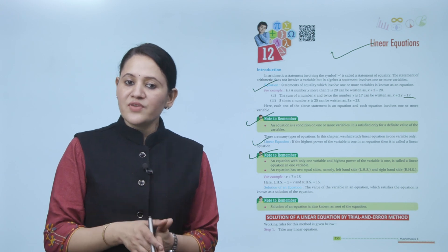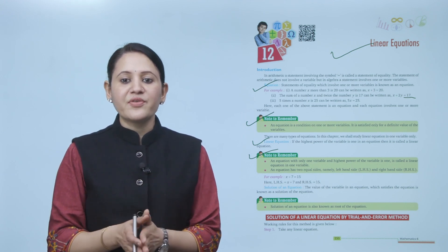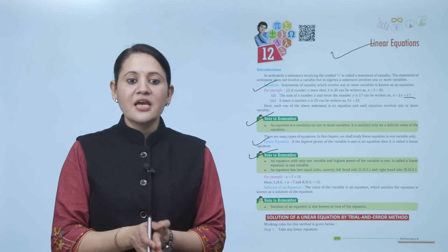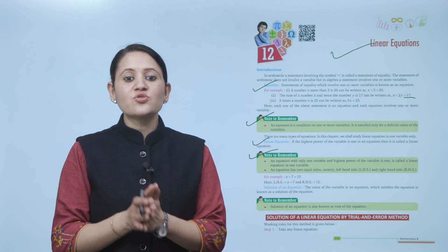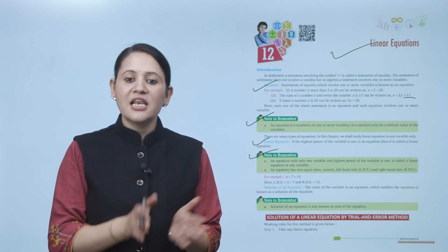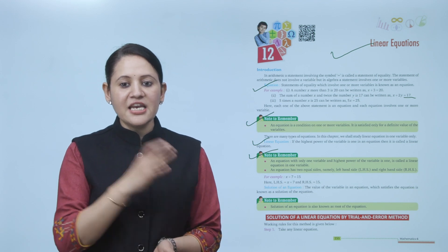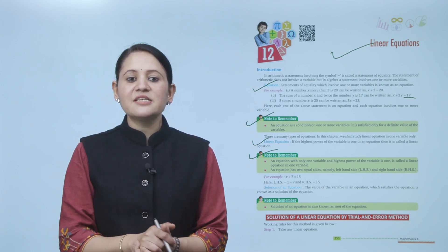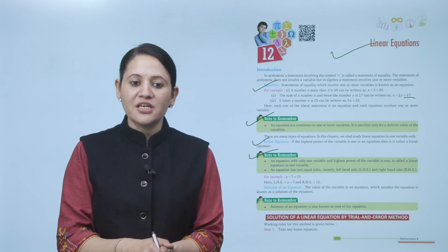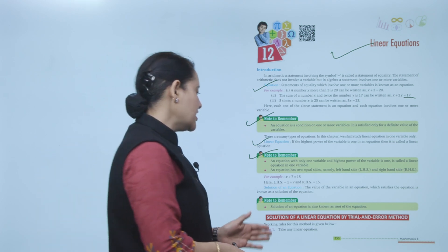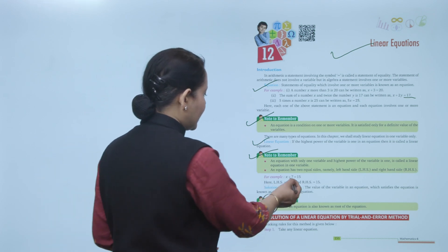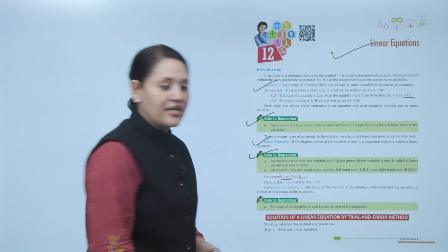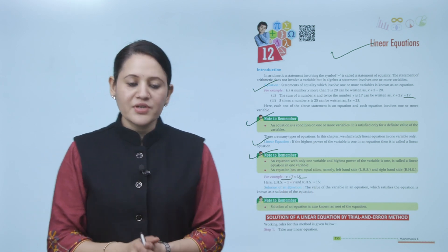Note to remember: an equation with only one variable where the highest power of the variable is one is called a linear equation in one variable. An equation has two equal sides: the left-hand side (LHS) and the right-hand side (RHS). For example, in X plus 7 equals 15, the LHS is X plus 7 and the RHS is 15.